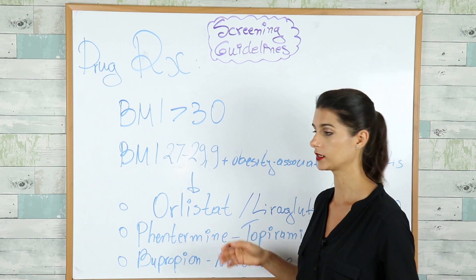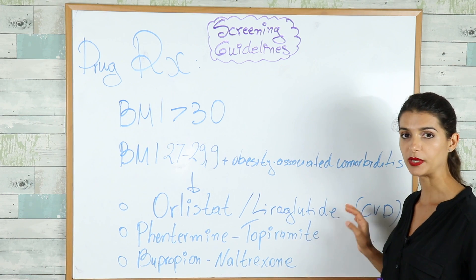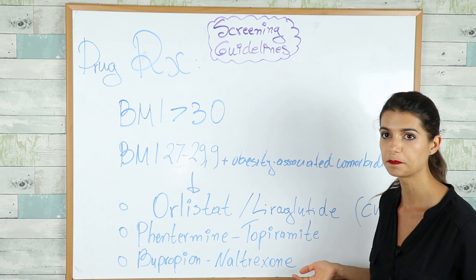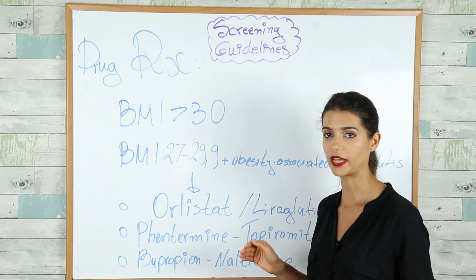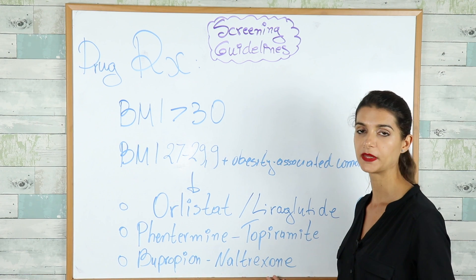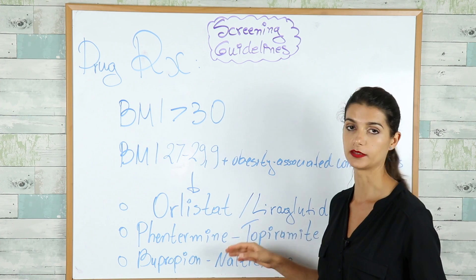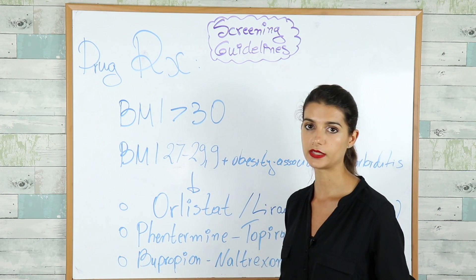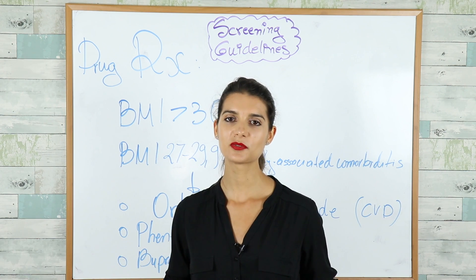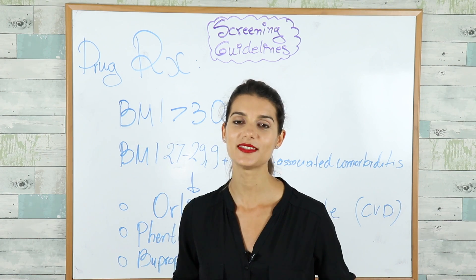The drugs you can choose from include Orlistat, Liraglutide — especially recommended in patients with cardiovascular disease — and some experts also recommend phentermine-topiramate and bupropion-naltrexone. When you see one of these as a possible answer on exam day, you can choose it knowing these are valid treatment options. This concludes today's video — thank you for watching and see you in the next one.